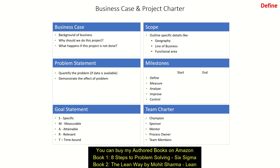The scope of the project should be defined clearly — what is in scope and what is out of scope. Milestone dates should also be given: the start date and end date of all phases. DMAIC has five phases: Define, Measure, Analyze, Improve, and Control. We should keep two weeks for each of these phases for a yellow belt kind of project. Then comes the team charter, where we have a champion, a sponsor, a mentor in the project, the process owner, and the team members supporting the project.